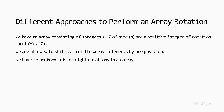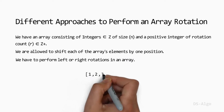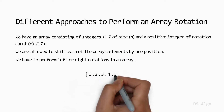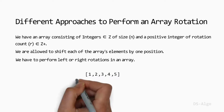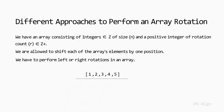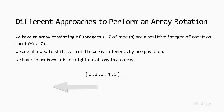For example, let's suppose a given array is 1, 2, 3, 4, 5. Array rotation simply means shifting the array elements to the left or right of the array by specified positions.